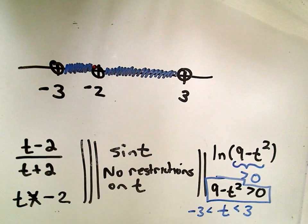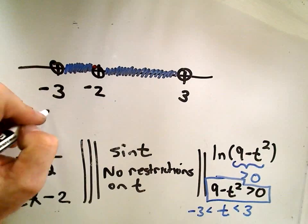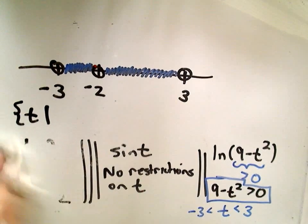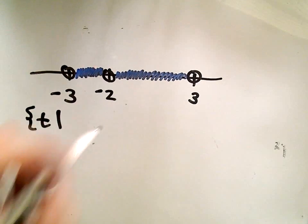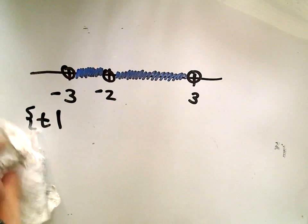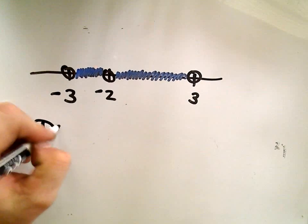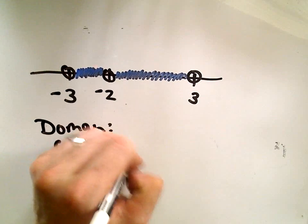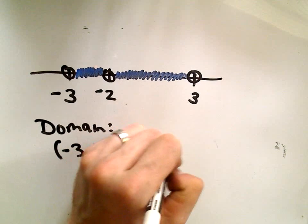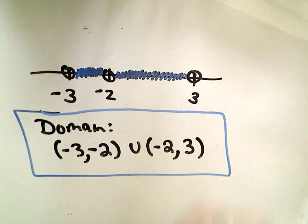So in interval notation, I would say our domain is the set of t... or I guess that's not interval notation, this is set notation now, excuse me. Let's use interval notation. Our domain is gonna be those t values between negative 3 and negative 2. We gotta skip over negative 2, and then up to positive 3. So there is the domain of our lovely vector function.